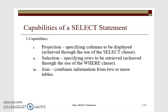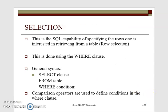SQL has different capabilities — majorly three. We have projection, where you can specify the columns that you want to display. Then selection, where you can specify the rows that you want to be retrieved. And then join, where you can join two or more tables together, as we shall see later in the course.